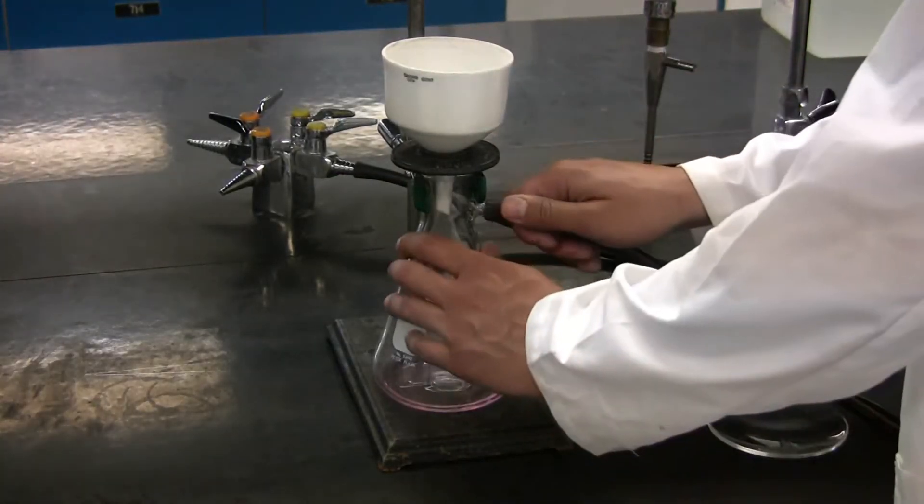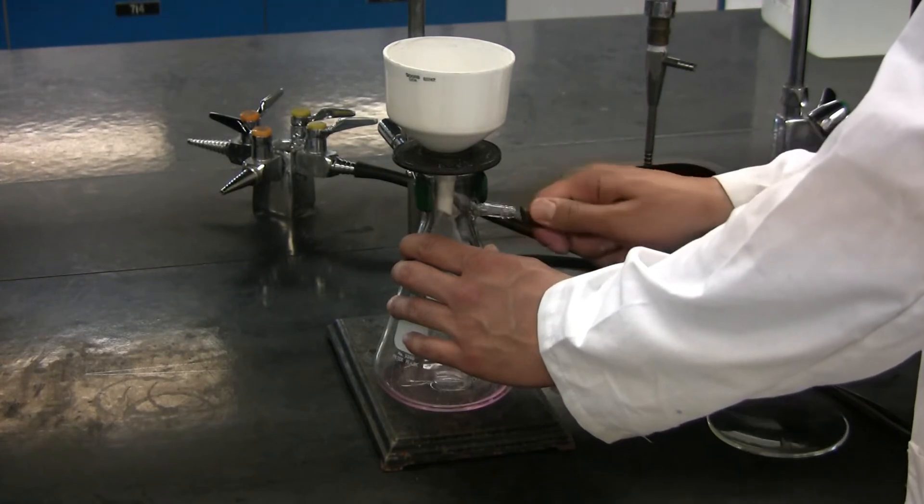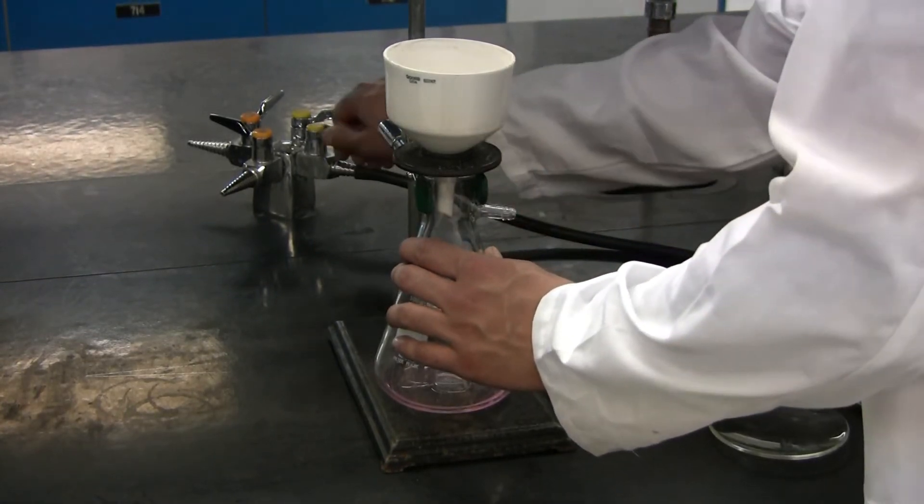Once fully dry, remove the vacuum valve from the Erlenmeyer flask and then turn off the vacuum.